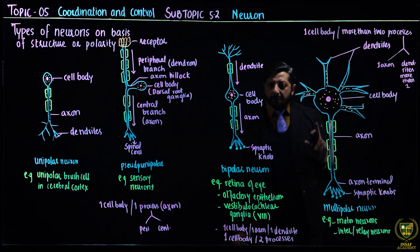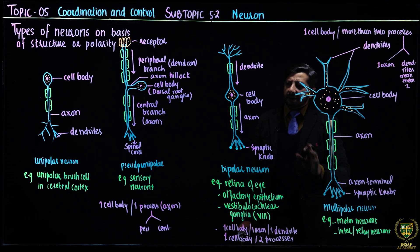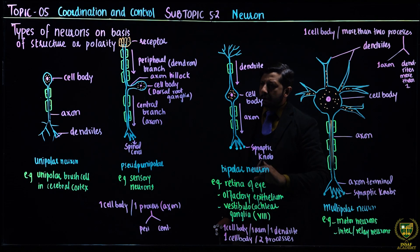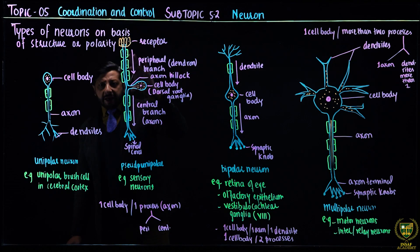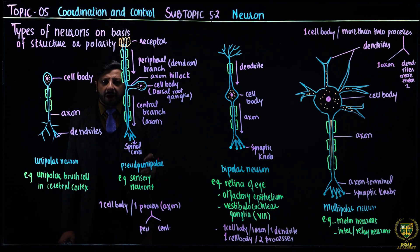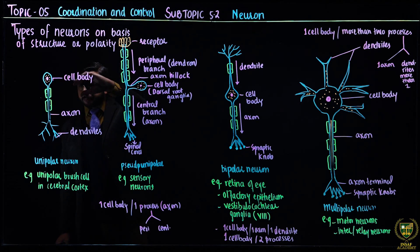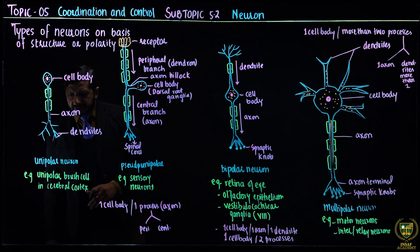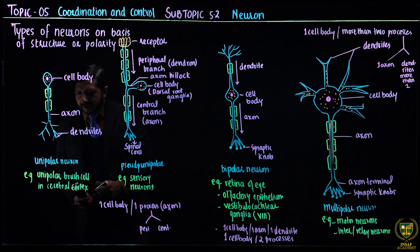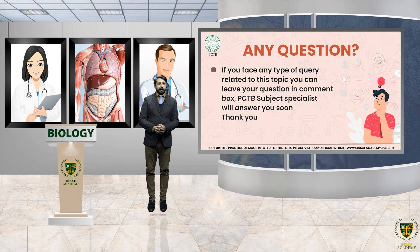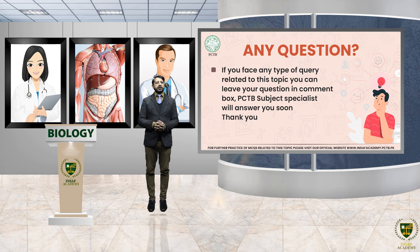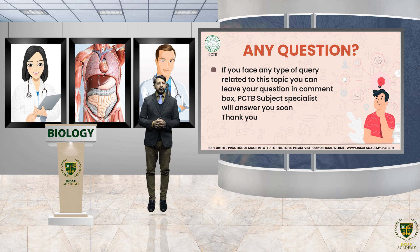One cell body and two processes: one dendrite and one axon is bipolar. One cell body and one process which divides into two branches, like in sensory neurons, is pseudo-unipolar. And if it is purely one branch, it is unipolar neuron. Dear students, hopefully today's lecture will clarify. If there is any question related to today's lecture, you can put your question in the comments box and our subject specialist will answer you soon. So take care of yourself. Until next lecture, Allah Hafiz.